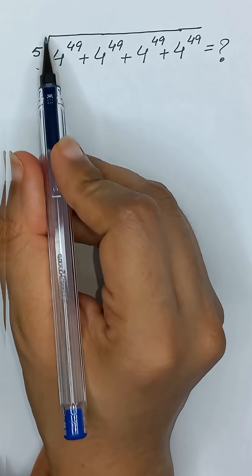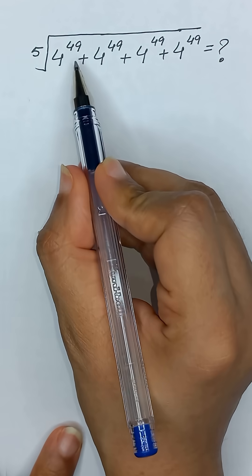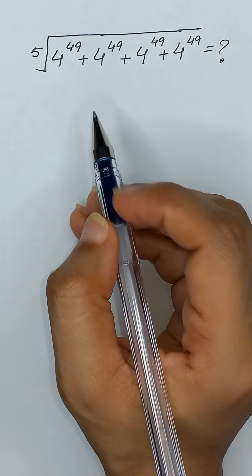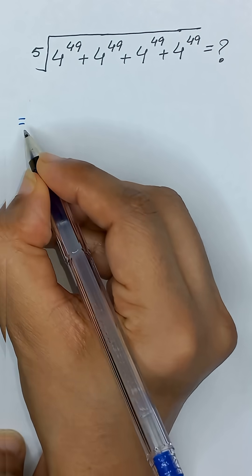What will be the value of fifth root of 4 to the power 49 plus 4 to the power 49 plus 4 to the power 49 plus 4 to the power 49? Okay, let's solve it.